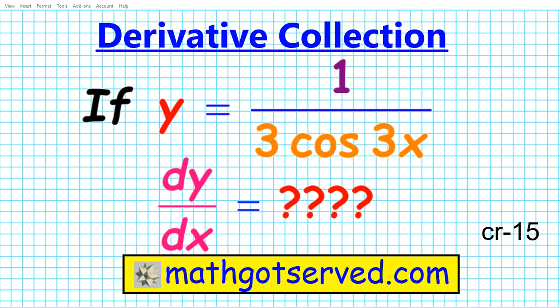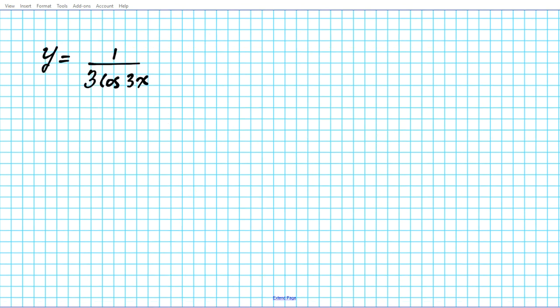Good day students, welcome to mathgotserved.com. In this clip we're going to be going over our derivative collection and we're going to be focusing on how to find the derivative of 1 over 3 cosine 3x. All right, so we have this function 1 over 3 cosine 3x and we want to find y prime.